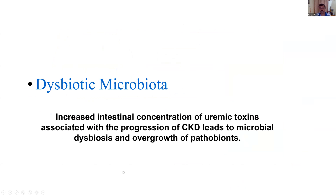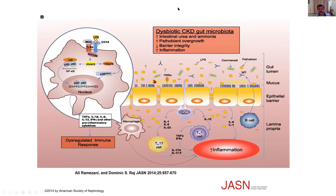In dysbiotic microbiota, there is increased intestinal concentration of uremic toxins that happens in CKD and end-stage renal disease patients. This has also been observed with the progression of chronic kidney disease — uremic toxins go up, and microbial dysbiosis with overgrowth of pathobionts also increases. Pathobionts take over the commensal cells. In dysbiotic CKD gut microbiota, you see more pathobionts, less commensal cells, and more lipopolysaccharides.